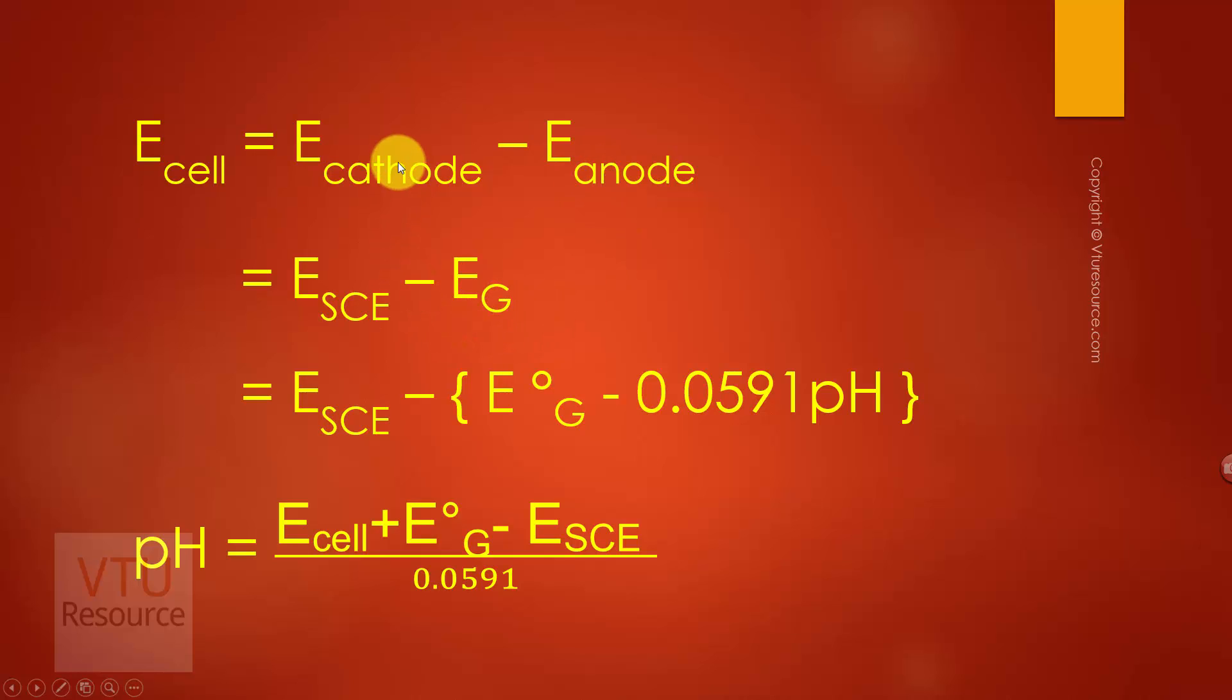By substituting the potentials of cathode and anode, we get E cell equals E standard calomel electrode minus E glass electrode. The glass electrode potential is given by E°G minus 0.0591 pH.